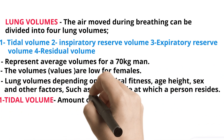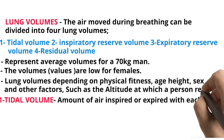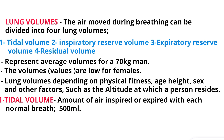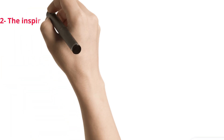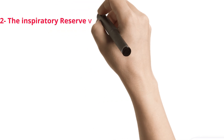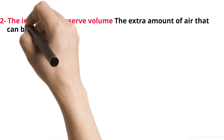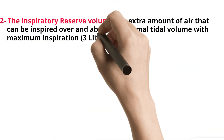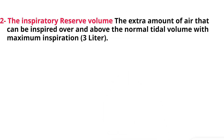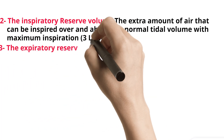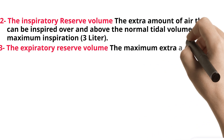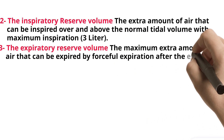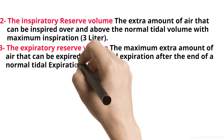1. Tidal Volume: the amount of air inspired or expired with each normal breath — 500 mL. 2. Inspiratory Reserve Volume: the extra amount of air that can be inspired over and above the normal tidal volume with maximum inspiration — 3L. 3. Expiratory Reserve Volume: the maximum extra amount of air that can be expired by forceful expiration after the end of a normal tidal expiration — 1,100 mL.